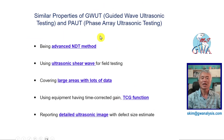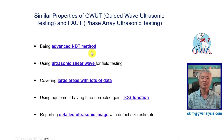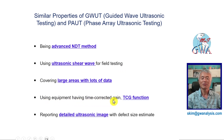GuideWave UT and PAUT have several similar properties: being advanced NDT methods, using ultrasonic shear wave for field testing, covering large areas with lots of data, using equipment with time corrected gain (TCG) function, and reporting detailed UT images with defect size estimates.